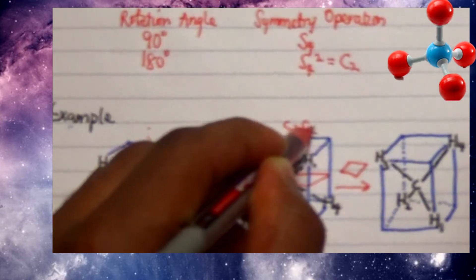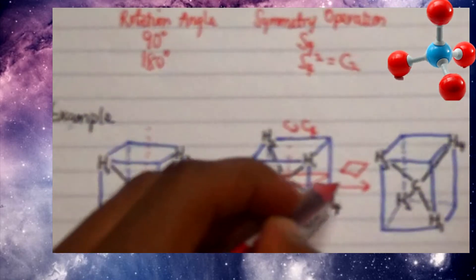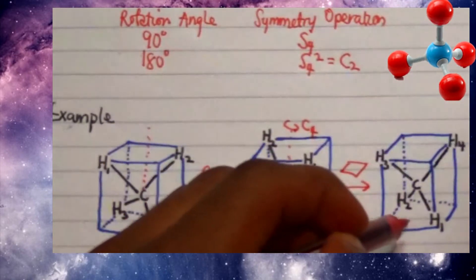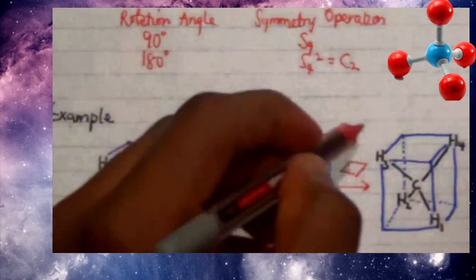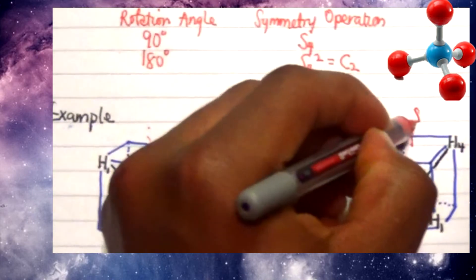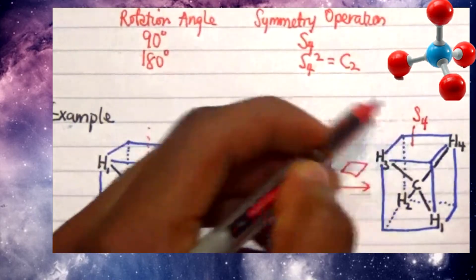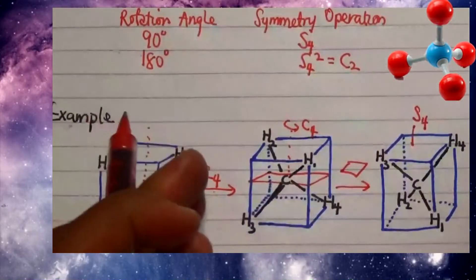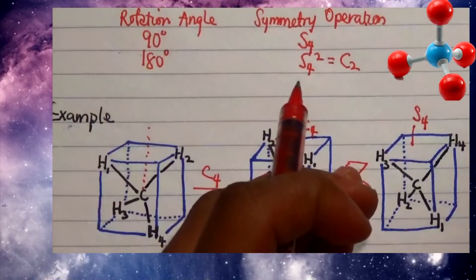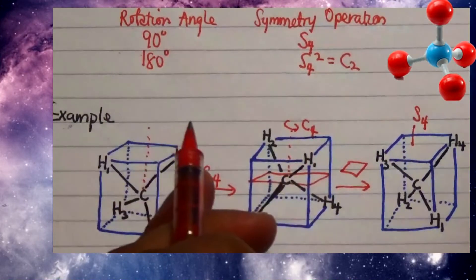So this mirror plane, as you notice, is actually perpendicular to that rotational axis that was actually applied in here, which is the C4. So a C4 plus a plane gives me this, which is in this case a S4, which is a representation of the combination of the C4 rotation and a mirror plane that is perpendicular to this.